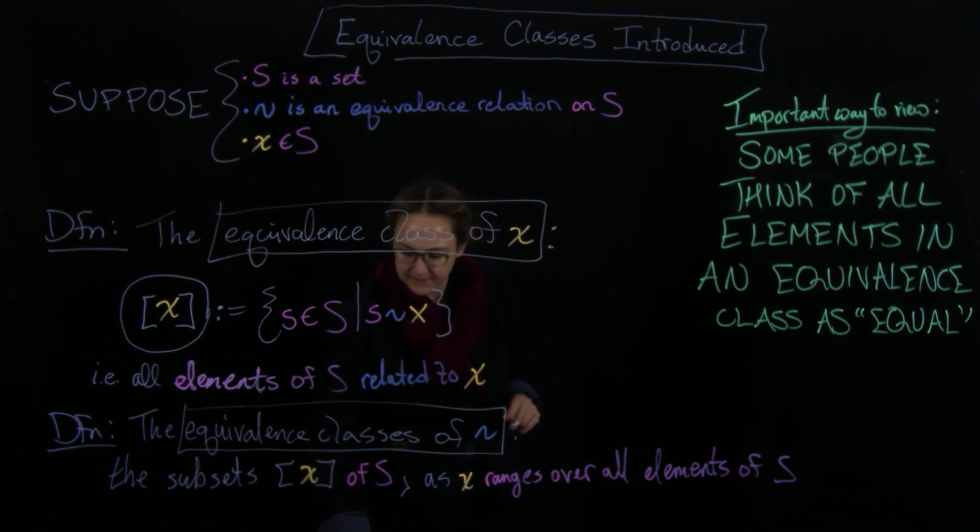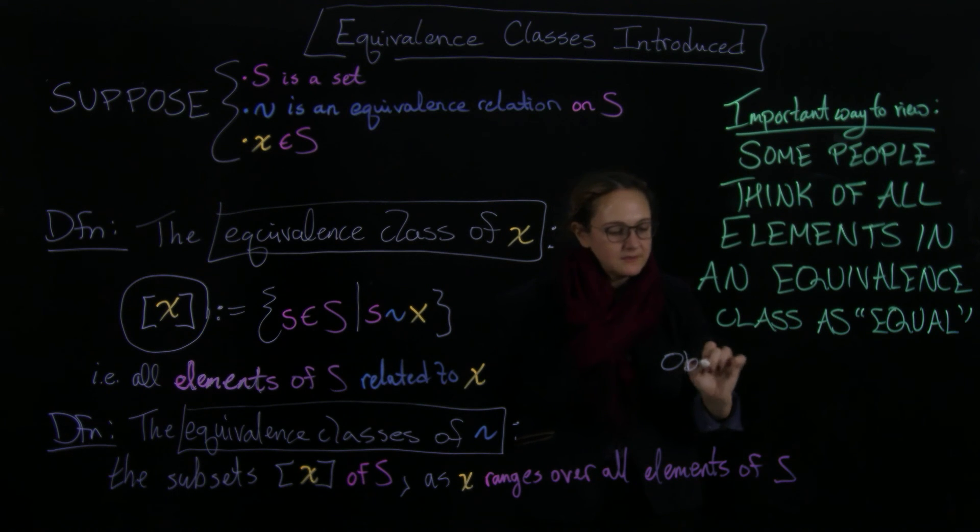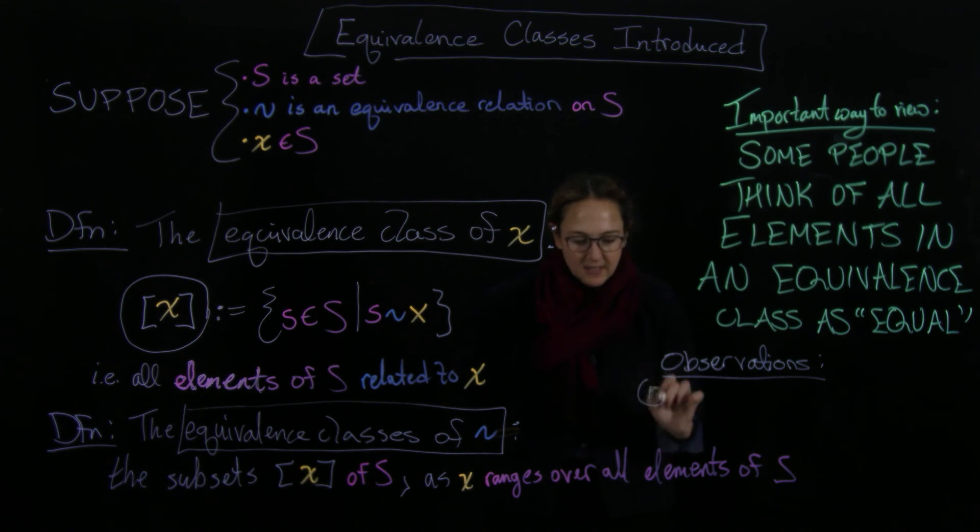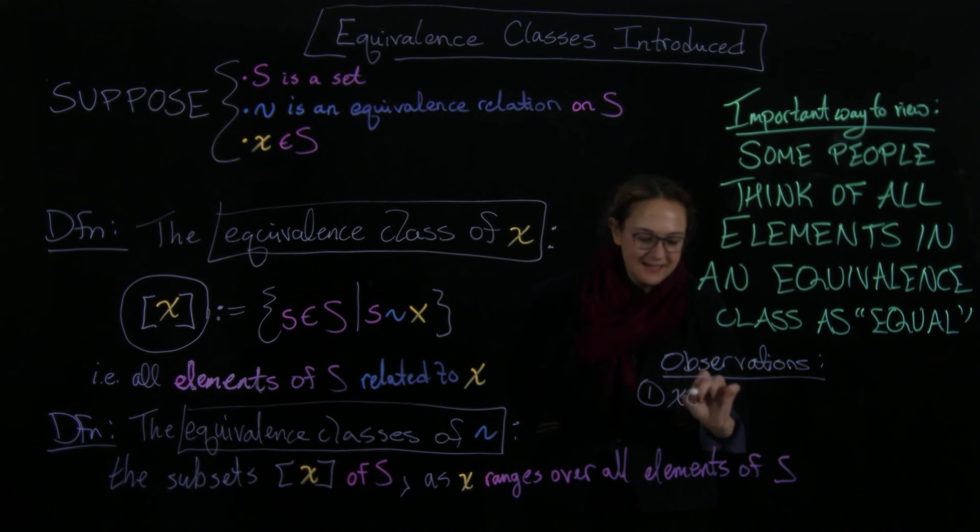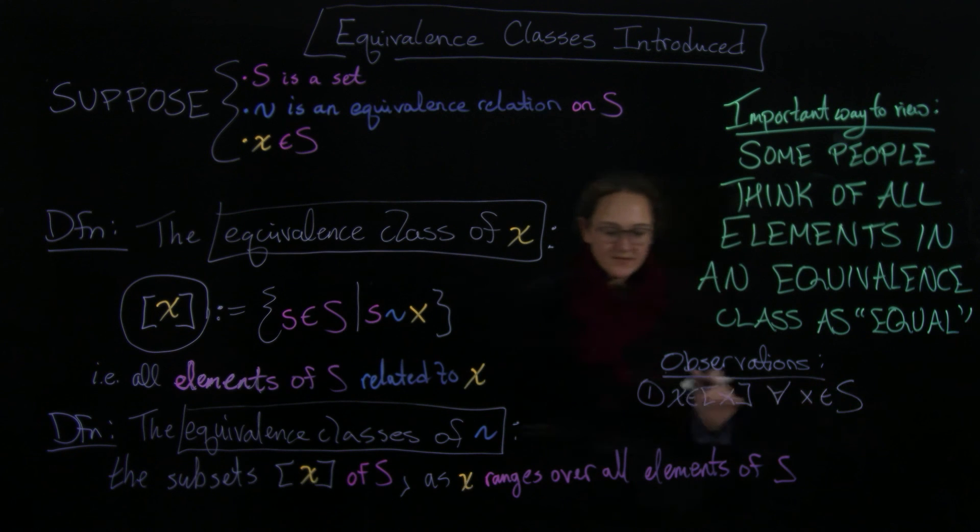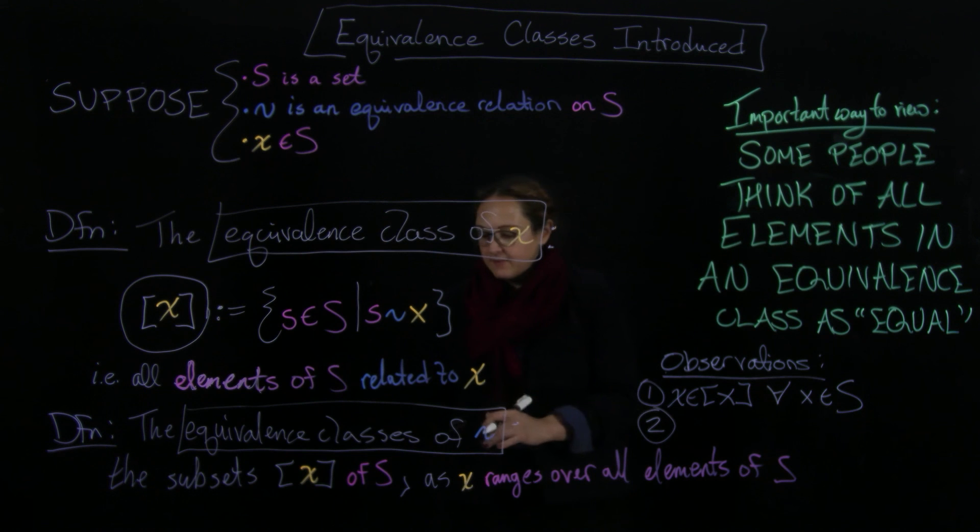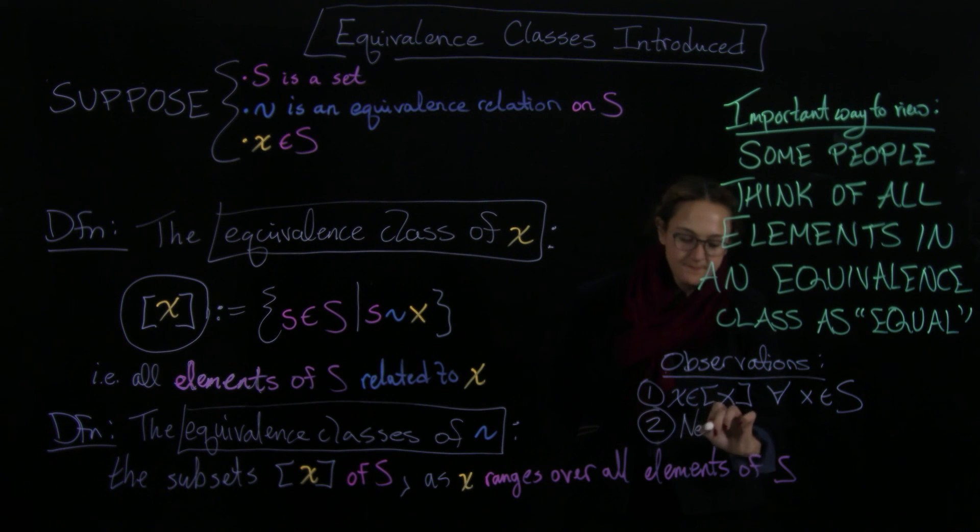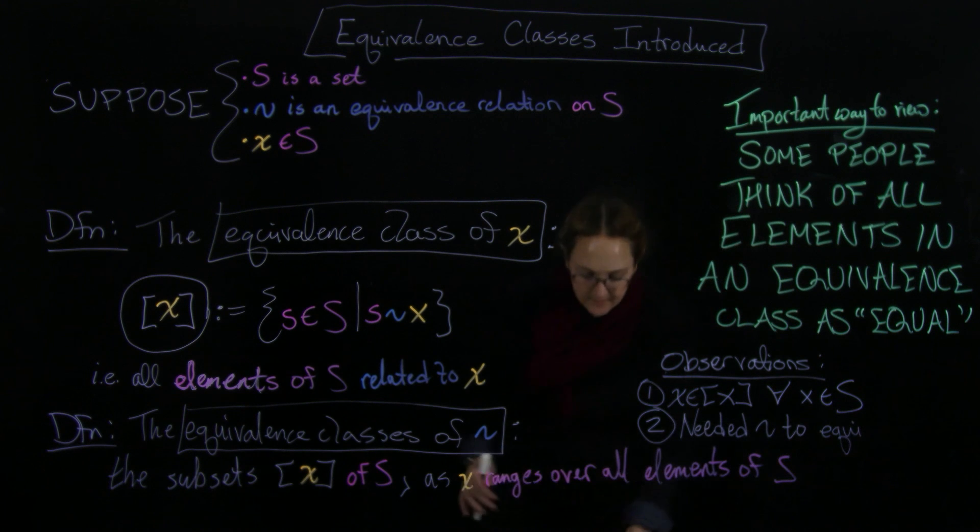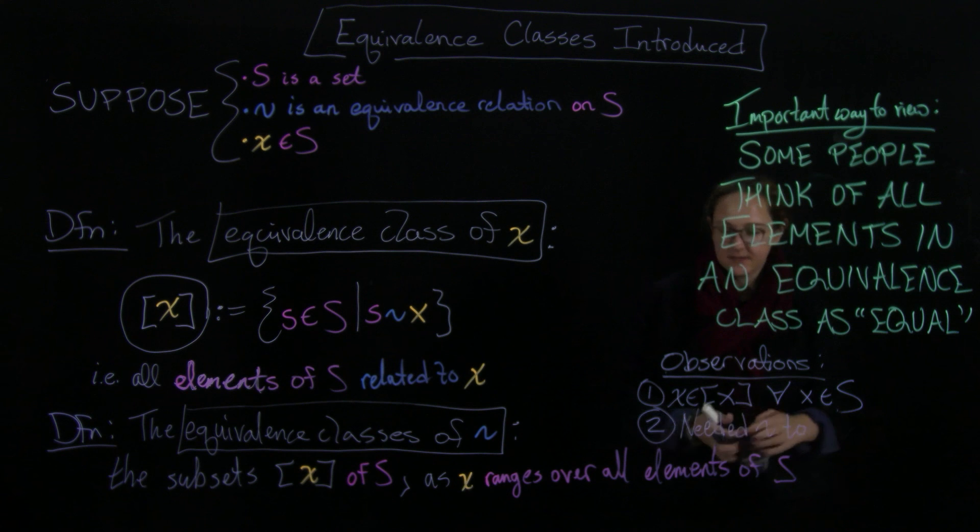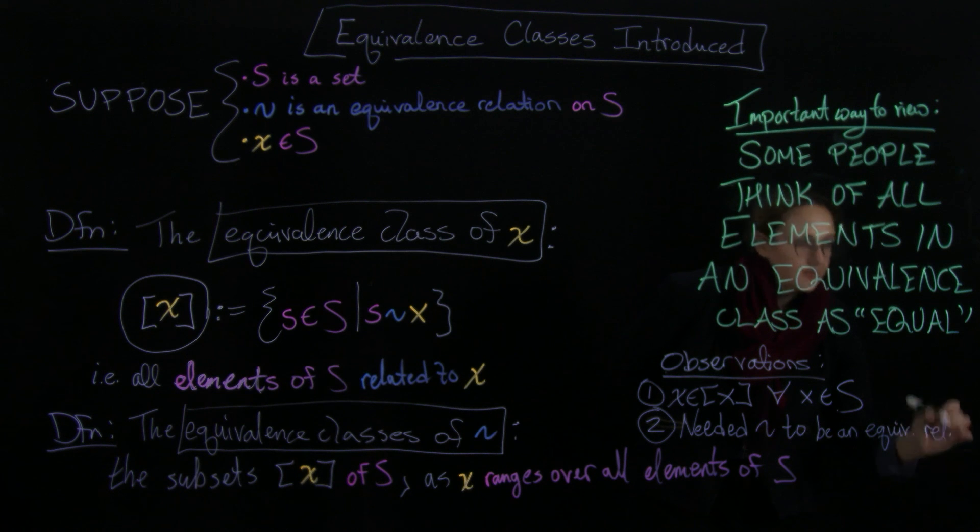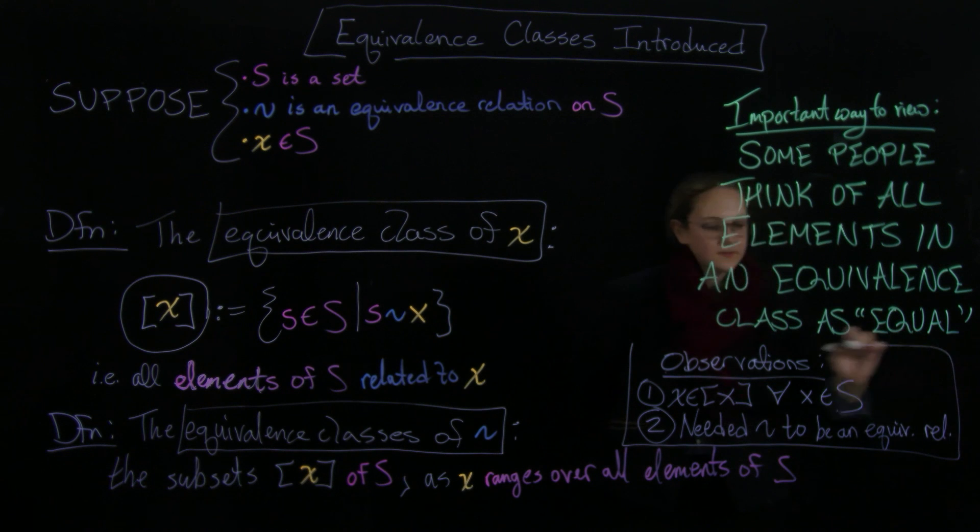Oh, I want to write two observations before we finish with this. So, observations. I wanted to write something really big, and I got so excited about that, I forgot that there's two very useful observations that you're going to want. So one of them is that x is always in its own equivalence class. Okay? So this is going to work for every element of your set. Whatever your set is, everything's always equivalent to itself. And then we also needed our relation to be an equivalence relation. We needed this to be an equivalence relation. It's not just enough that it's a relation, it actually needs to be an equivalence relation. Okay?